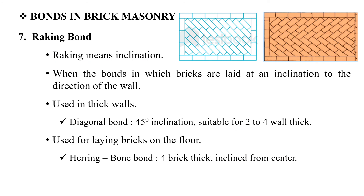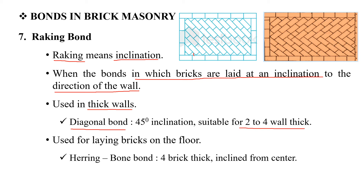The next bond is the Racking bond. The word racking means inclination. There are different types including the diagonal bond and the herringbone bond. The diagonal bond is mostly suitable for walls that are two to four bricks thick. The herringbone bond involves bricks laid at an inclination from the center, going upward in both directions.